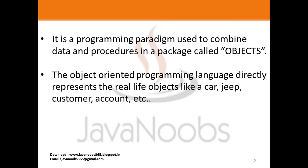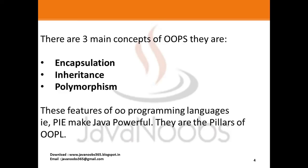Now in object-oriented programming there are three main crucial concepts: encapsulation, inheritance, and polymorphism. If you use these concepts, programming becomes much easier and your code will become very powerful and robust. These features — polymorphism, inheritance, and encapsulation — make Java powerful. They are basically the pillars of Java and object-oriented programming.